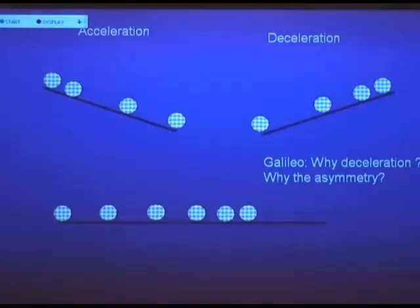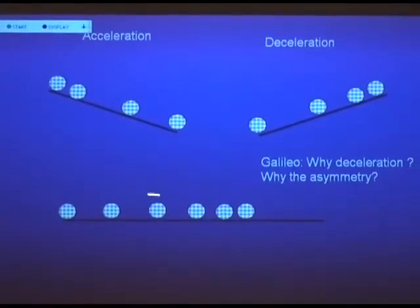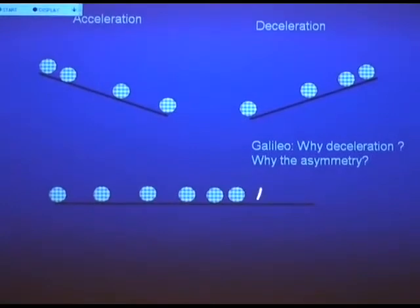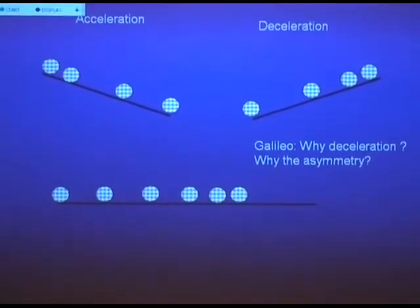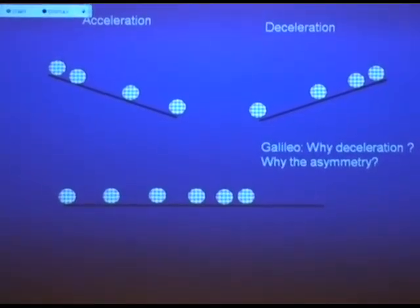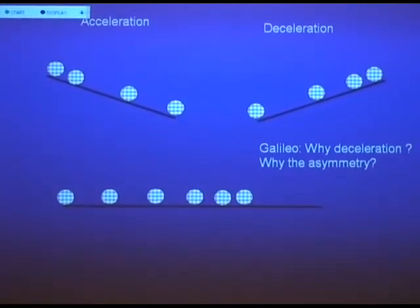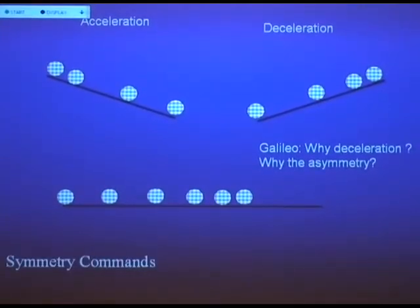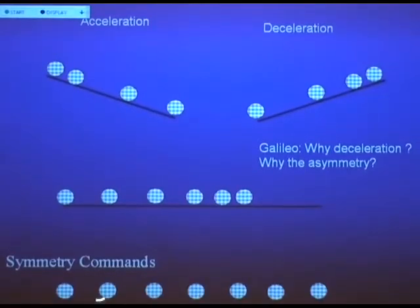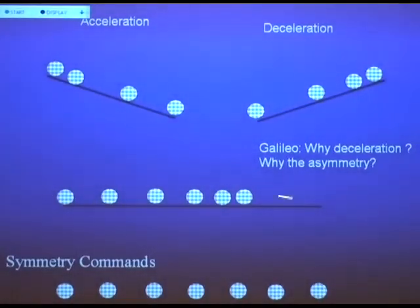And so Galileo is saying, wait a minute, why should an object come to a stop if there's no upward incline? It should keep going. So there you have Galileo's thinking in terms of symmetry, and then from the symmetry you have this leap of thought that even though you never see this, what should really happen is the object should just keep moving forward forever and ever.